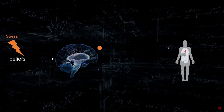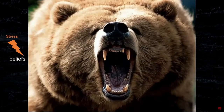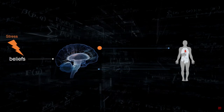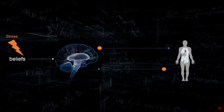Back in the day, when there was a stressor — for instance, you go hiking and you encounter a bear — your brain would release the classical stress response: producing cortisol, releasing adrenaline, getting into fight-or-flight mode because you want to run away.